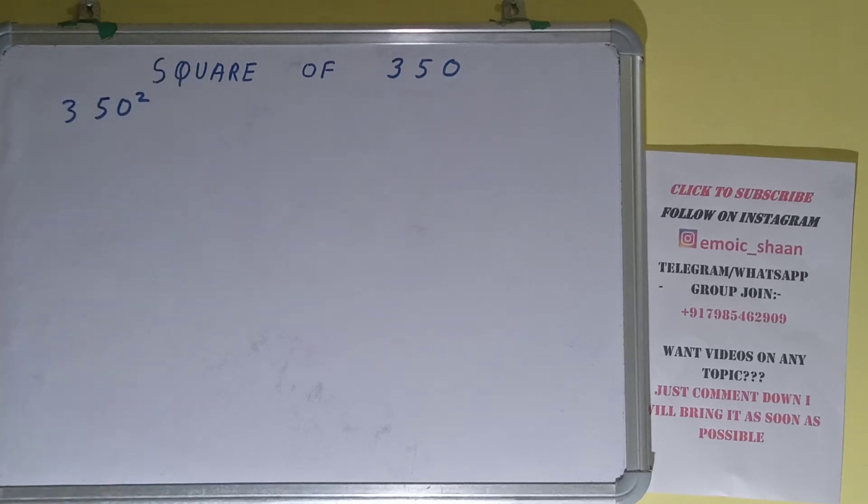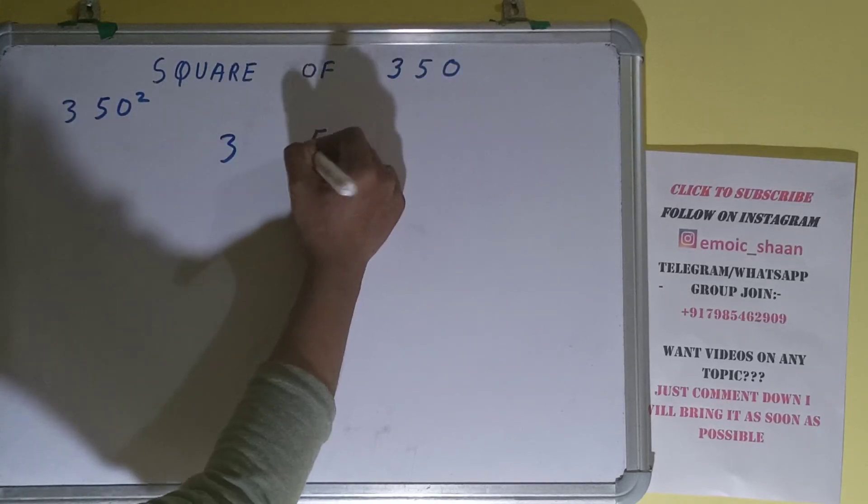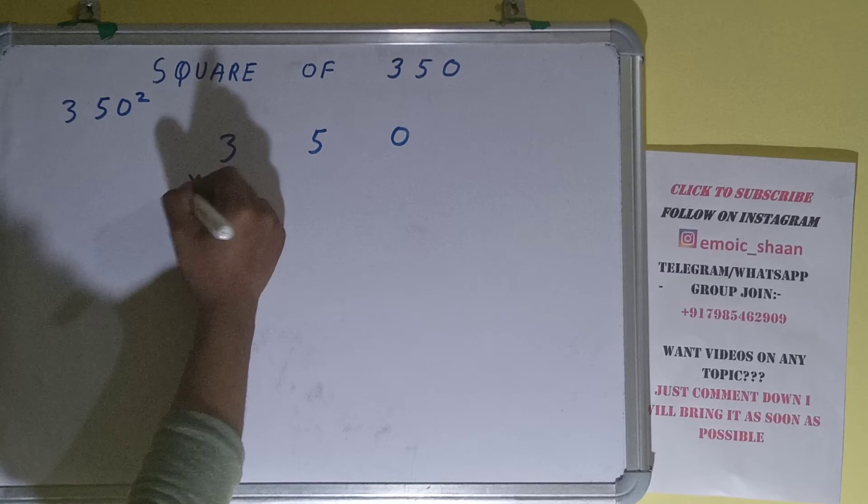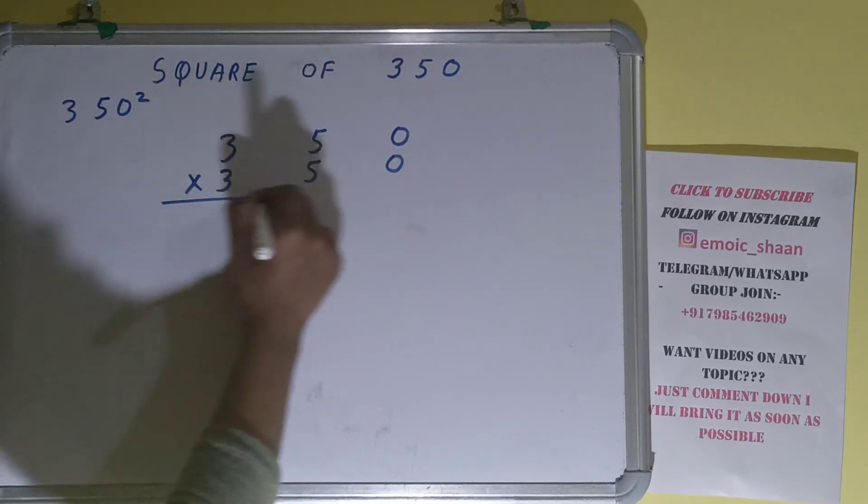Now coming on to the solution, square basically means multiplying the number by itself. The number here is 350. To find square of it, we need to multiply by itself, that is 350, and do the multiplication.